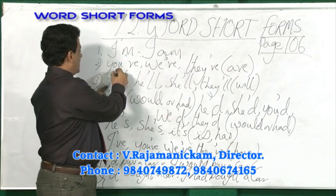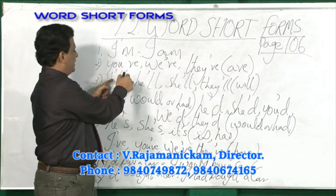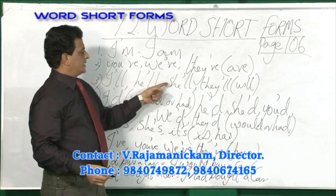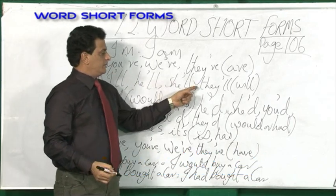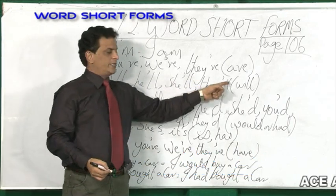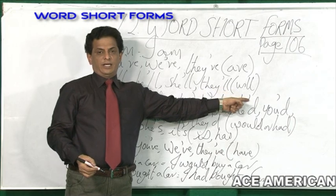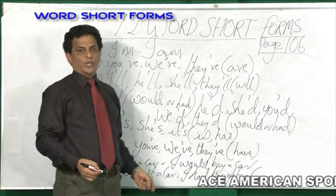And here, I apostrophe double L — I'll. He apostrophe L — he'll. She apostrophe double L — she'll. They apostrophe L — they'll. It means they will, he will, you will.